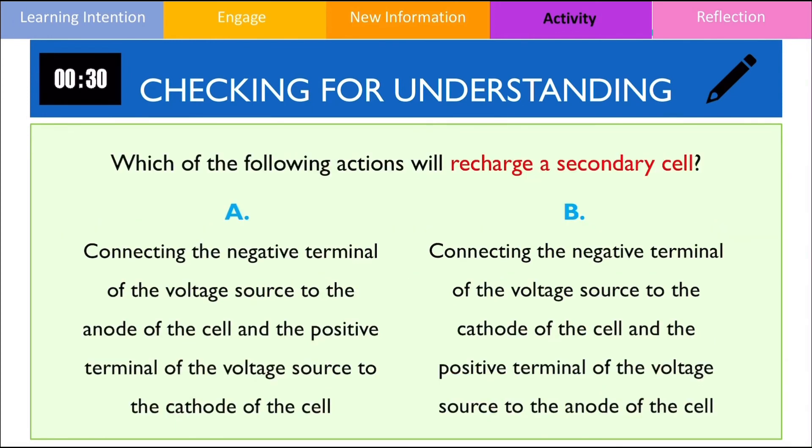Which of the following actions will recharge a secondary cell? The correct answer is that we should connect the negative terminal of the voltage source to the negative electrode, which in this case is the cathode, and the positive terminal of the voltage source to the positive electrode, which is the anode.